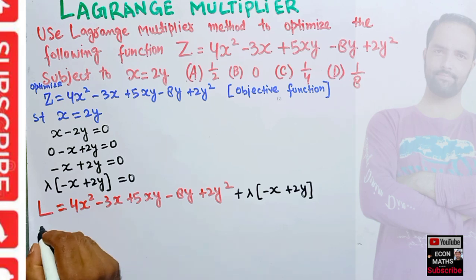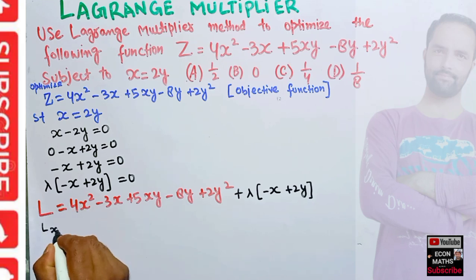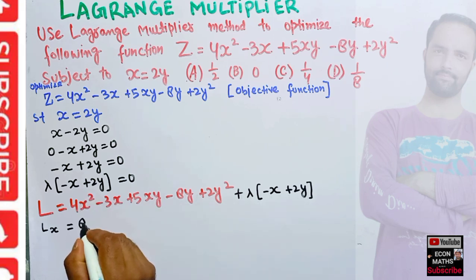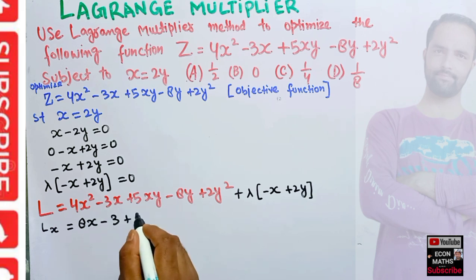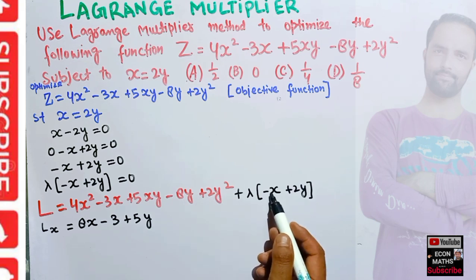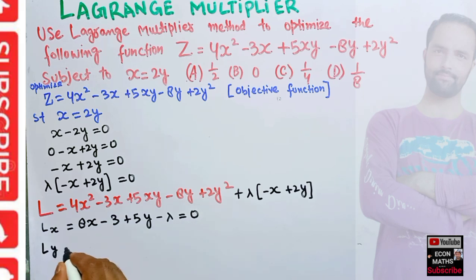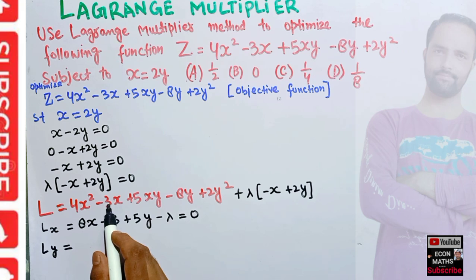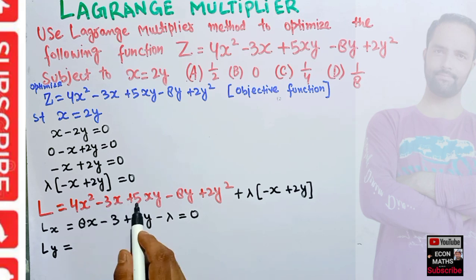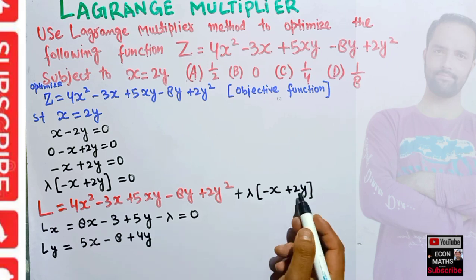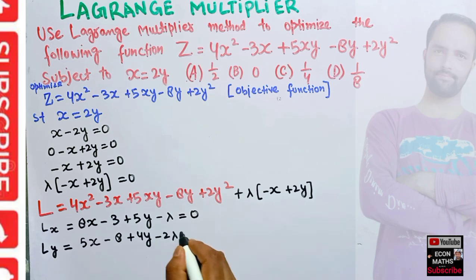To find the optimal values of x and y, we differentiate the Lagrangian partially. Taking the partial derivative with respect to x: ∂L/∂x = 8x - 3 + 5y - λ = 0. In similar fashion, the partial derivative with respect to y gives: ∂L/∂y = 5x - 8 + 4y - 2λ = 0.